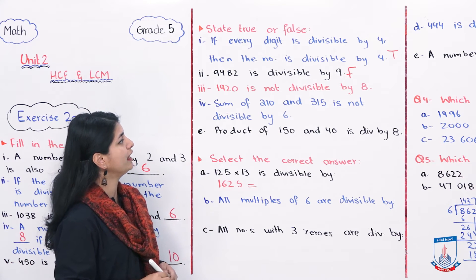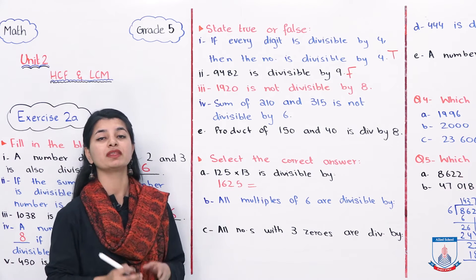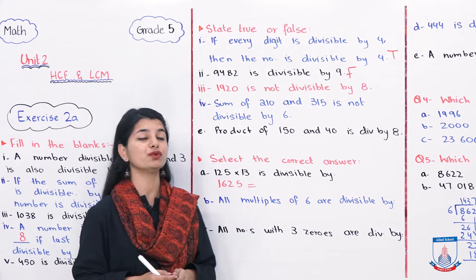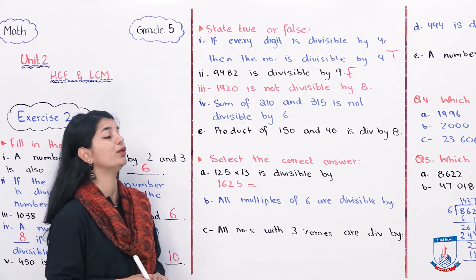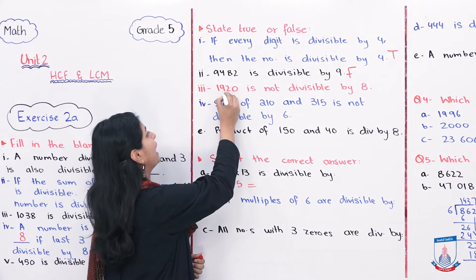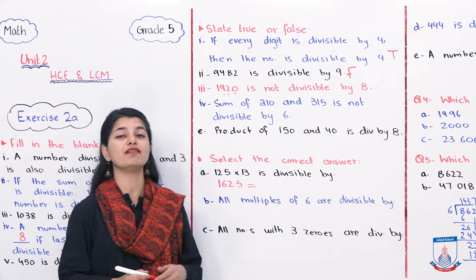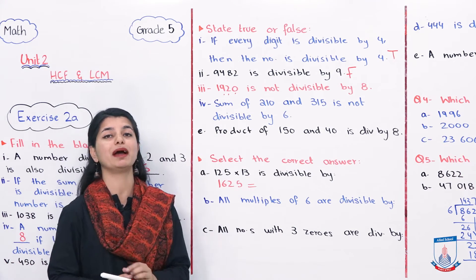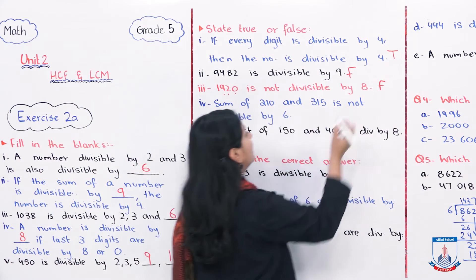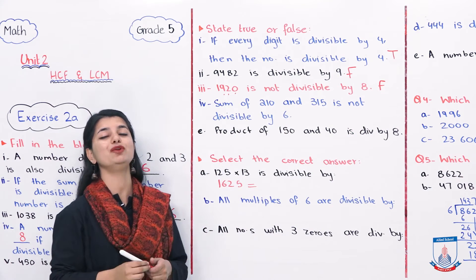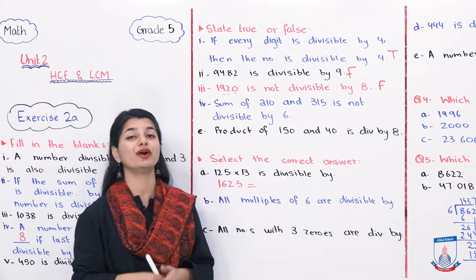Then we have: 1920 is not divisible by 8. To test divisibility by 8, we check that the last 3 digits are divided by 8. 920: if we check, 920 is divisible by 8. So this is false, because 1920 is divided by 8, because 920, the last 3 digits, are divided by 8.